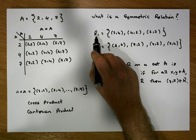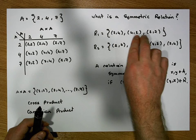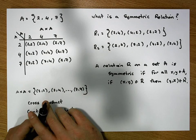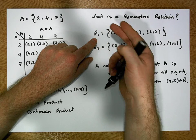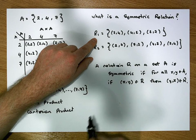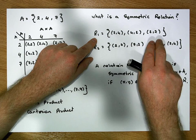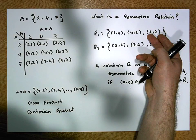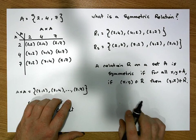So the question is: is the relation R1 symmetric? For R1 to be symmetric, for each ordered pair in R1, when we flip it, we would expect to find that flipped pair also in R1. We have (2,4) in R1 — flipping gives (4,2), and (4,2) is in R1. We have (4,2) in R1 — flipping gives (2,4), and that is in R1. But (2,7) is in R1 — flipping gives (7,2) — and (7,2) is not in R1. So R1 is not symmetric.